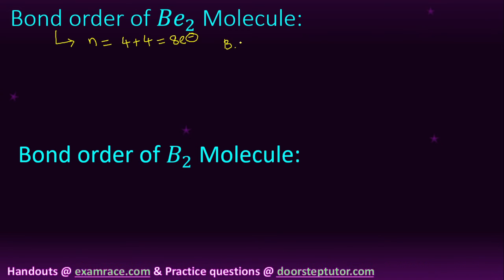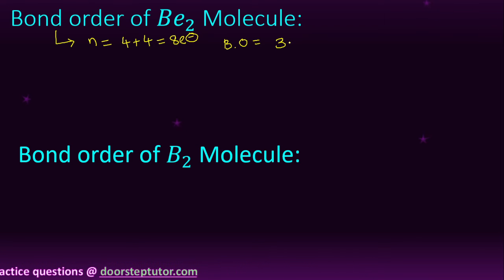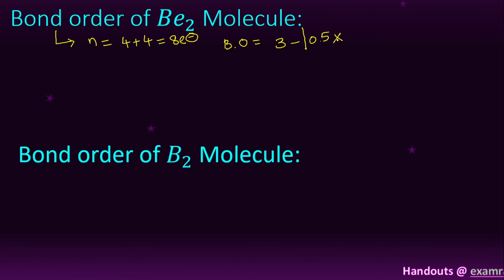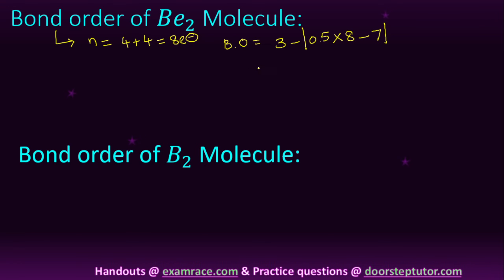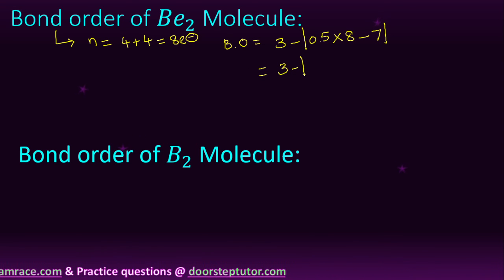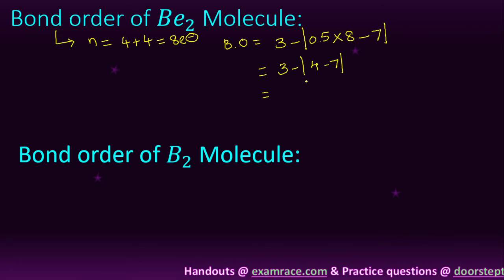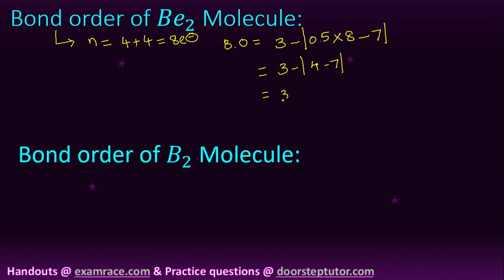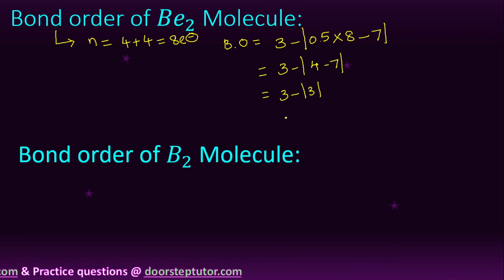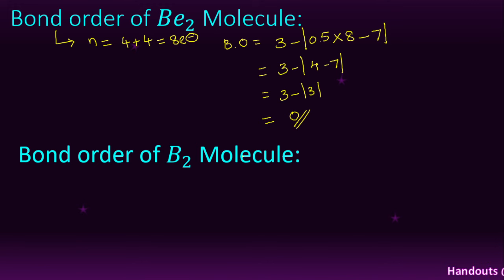Bond order = 3 minus modulus of (0.5 × 8 − 7) = 3 minus modulus of (4 − 7) = 3 minus modulus of (−3). Since it is a modulus, we take the absolute value, so |−3| = 3. Therefore, bond order = 3 minus 3 = 0. The bond order of Be₂ molecule is 0.